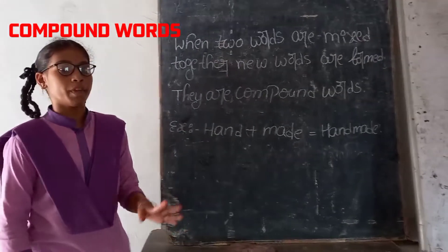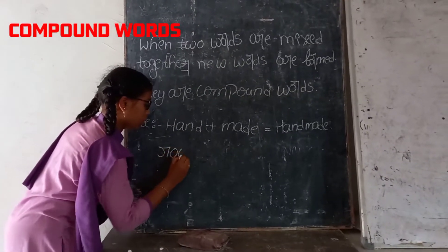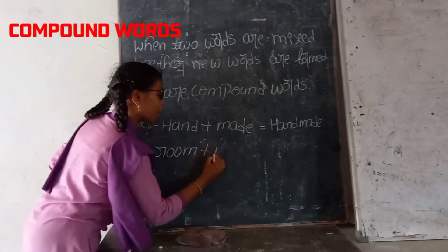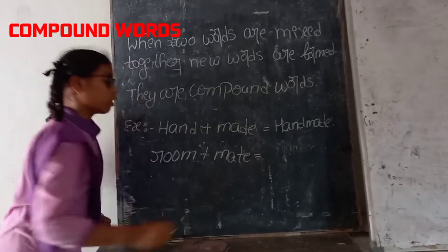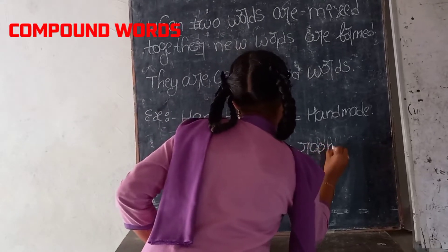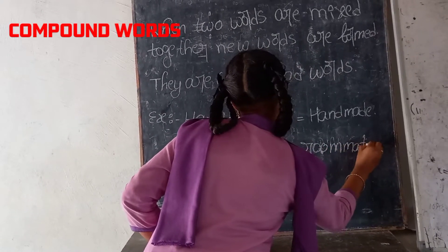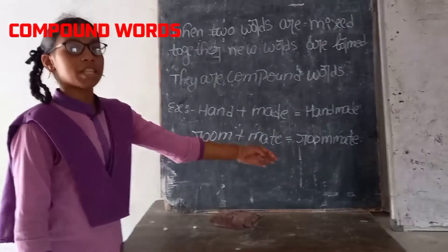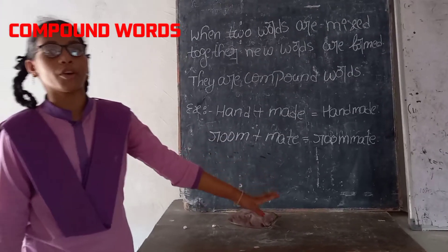Let's take another example: roommate. Room is one word, mate is another word. They are mixed together, then a new word is formed. That is roommate. It is called a compound word.